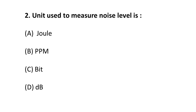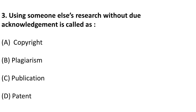The next question is: what is the unit used to measure noise level? They asked what unit measures sound or voice level. The options are: Joule — used for energy; PPM (parts per million) — used for concentration; bit — used for memory; and decibel (dB) — used for noise level. So remember: decibel is for noise level, PPM is for concentration, bit is for memory, and Joule is for energy.